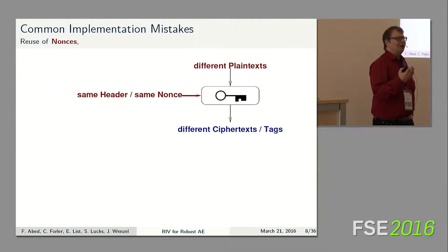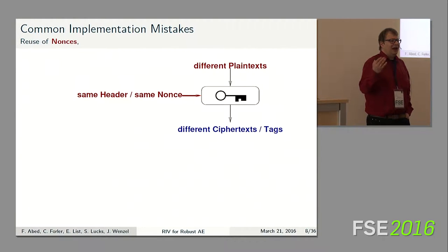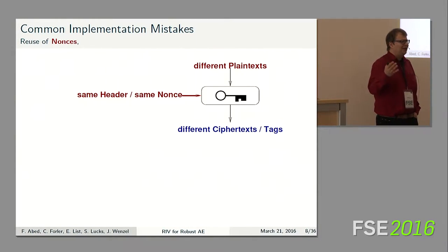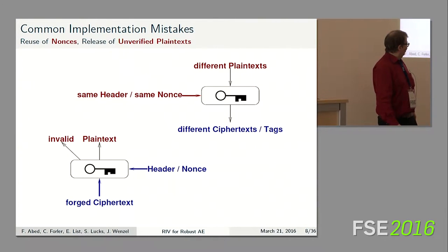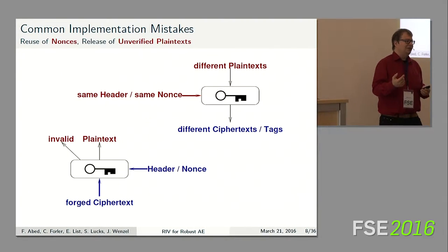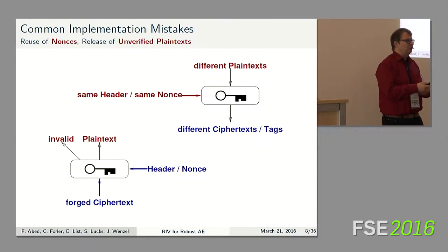When we look at where systems fail in practice, quite frequently either of these two assumptions is violated. Either someone accidentally repeats a nonce, allowing the adversary to mount an attack where the same nonce and header are used with changing plaintext to learn something about the secret key. Or, in a chosen-ciphertext setting, the adversary forges a ciphertext and makes a decryption query — our algorithm correctly flags it as invalid, but some information about the plaintext leaks out anyway. These are common patterns in practical attacks.